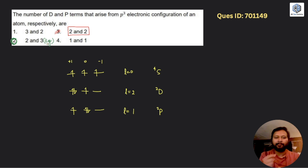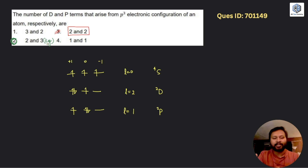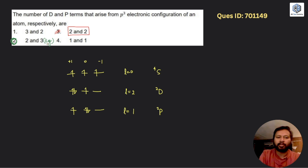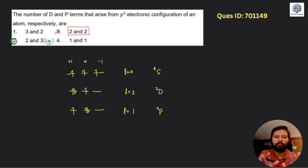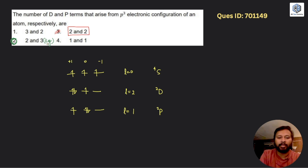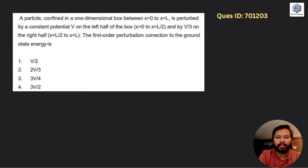So for p³ configuration, Atkins gives 2D and 3P, which matches the answer key. This means the answer key may be correct. If someone challenges this question, I'm not sure whether it will be accepted or not. But if you want to challenge it, you need a solid reference showing 2D and 2P terms. Let me know in the comments if you have such a reference.